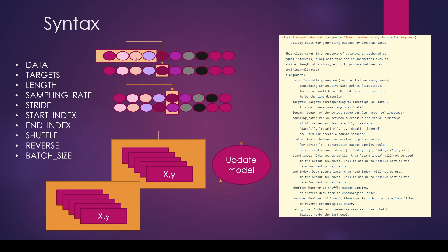The first argument is data — obviously something you already have, a series of time samples. The next thing is the target, and the target could be the same data series. The sampler will take X data from the first series and Y data from the target series. For example, if I want to use four samples to predict the fifth sample, I input these two sequences into the time series generator with length set to four, and it'll take those four and pick the fifth one from the target — so you end up predicting the fifth element in the series.